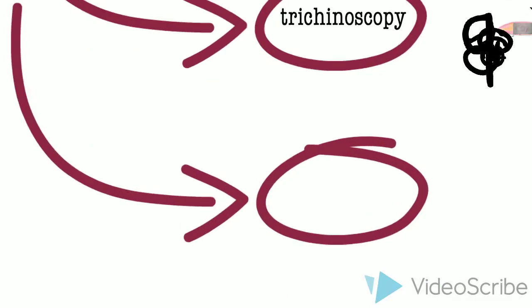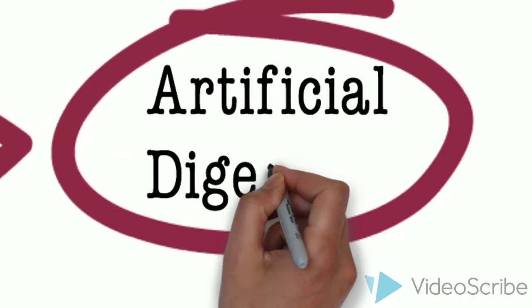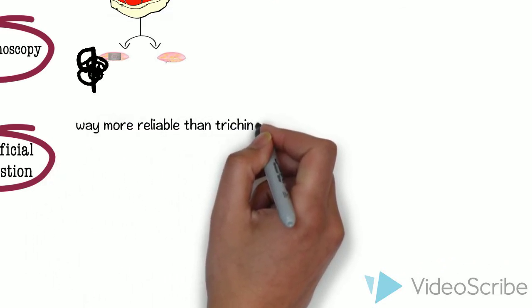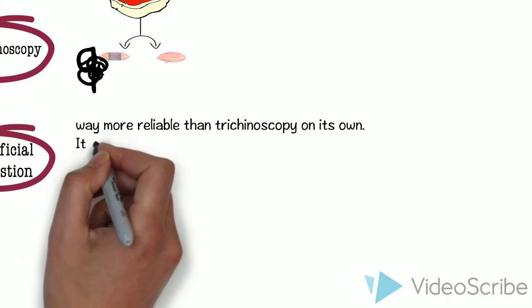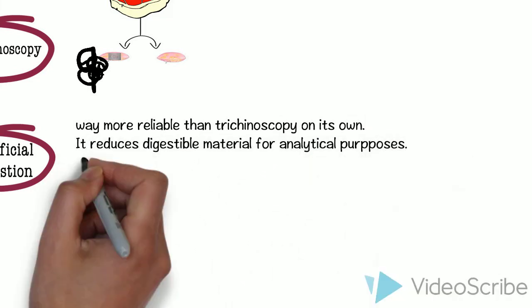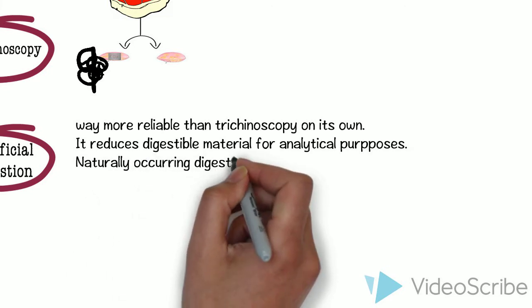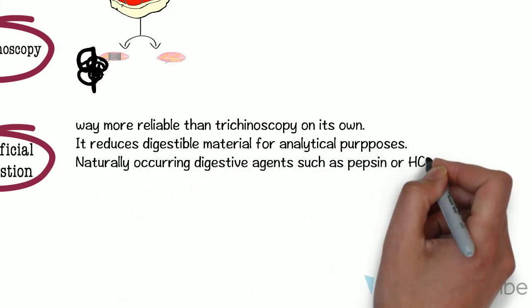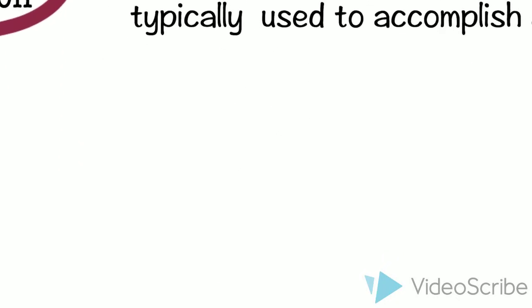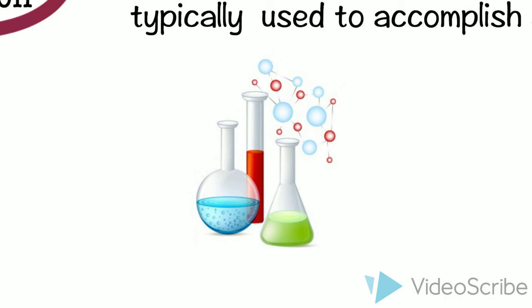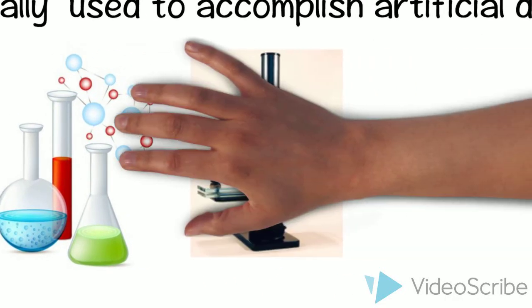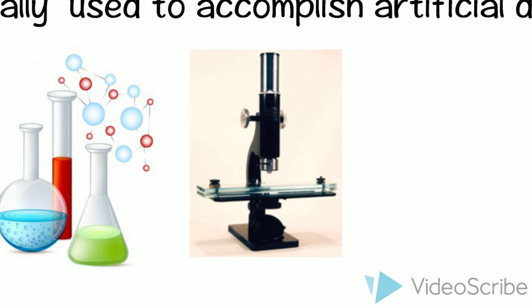The second one is artificial digestion. It is a laboratory technique noted to be way more reliable than trichinoscopy on its own. It reduces digestible material for analytical purposes. Naturally occurring digestive agents such as pepsin and hydrochloric acid are typically used to accomplish artificial digestion. The meat sample is dissolved by a digestive solution and the remains are examined for the presence of larvae using the former technique.